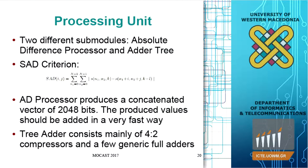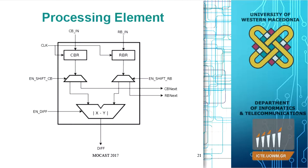We are using a tree adder which uses four-to-two compressors. The basic processor element uses a multiplexer that selects either x minus y or y minus x, according to whether we detect a sign from the previous operation.